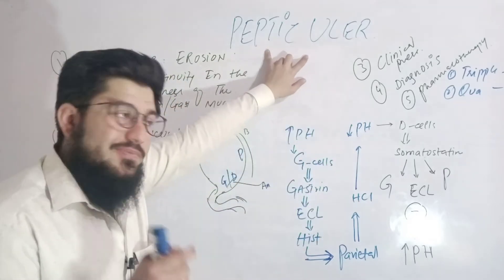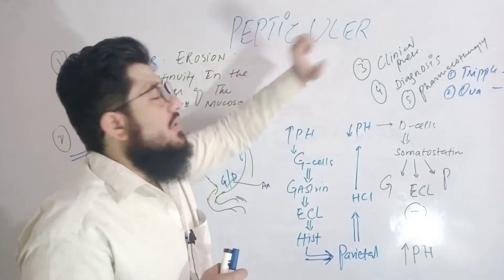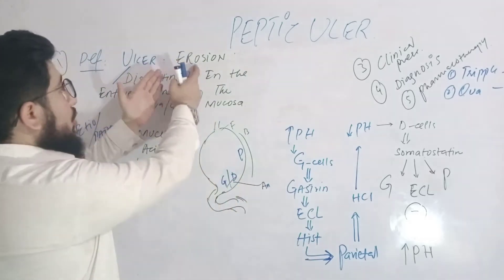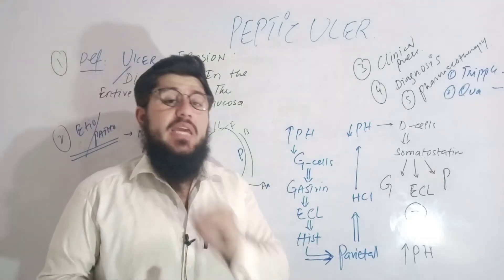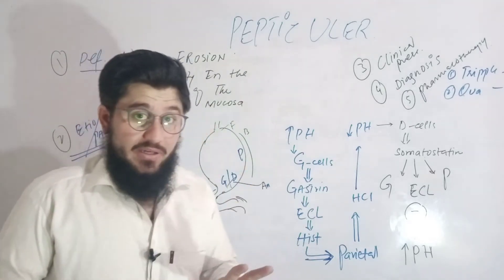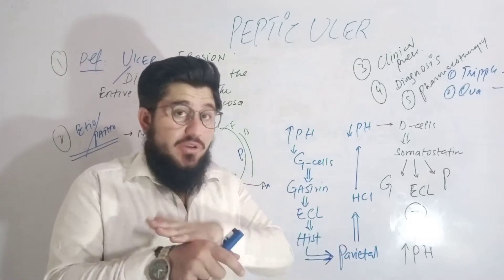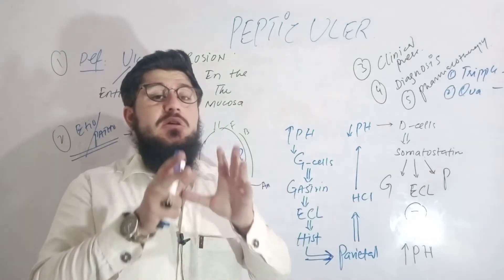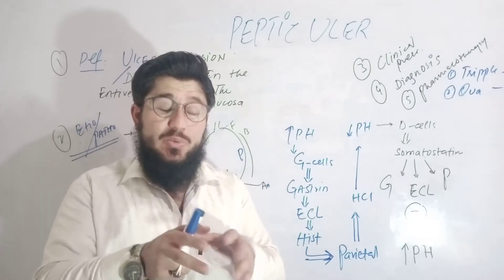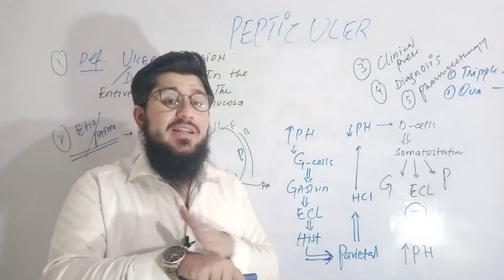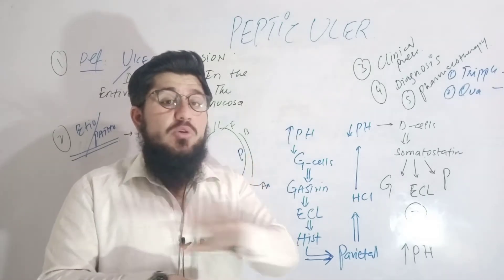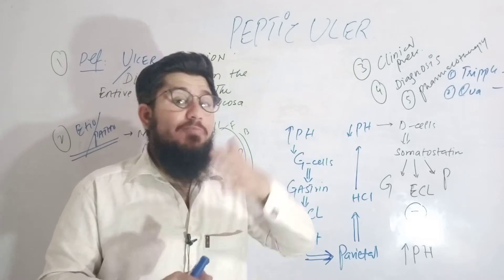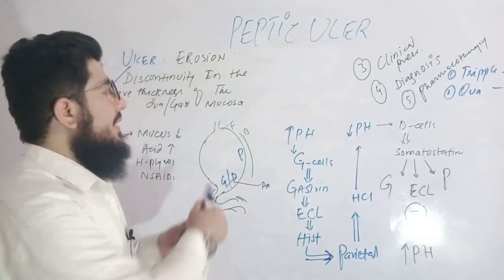What is an ulcer? Very simple — erosion of any protective layer. If any protective layer anywhere is removed, that is called an ulcer. What is a peptic ulcer? Peptic is actually a collective term used for two regions.